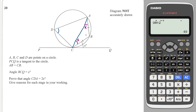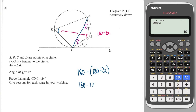That means the angle at the top of the triangle is 180° − 2x. By opposite angles in a cyclic quadrilateral adding to 180°, angle CDA = 180° − (180° − 2x) = 180° − 180° + 2x = 2x. So we've proved that this angle is 2x.